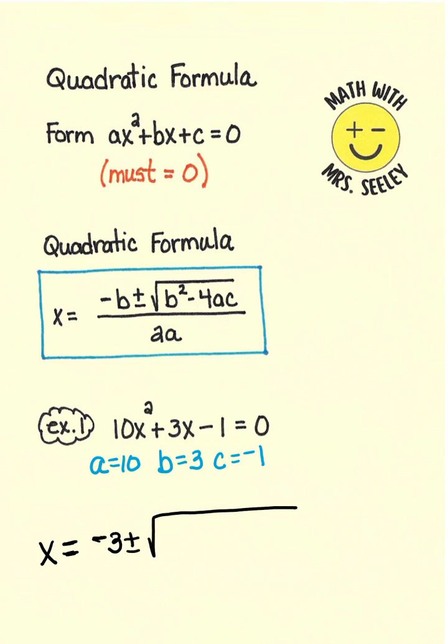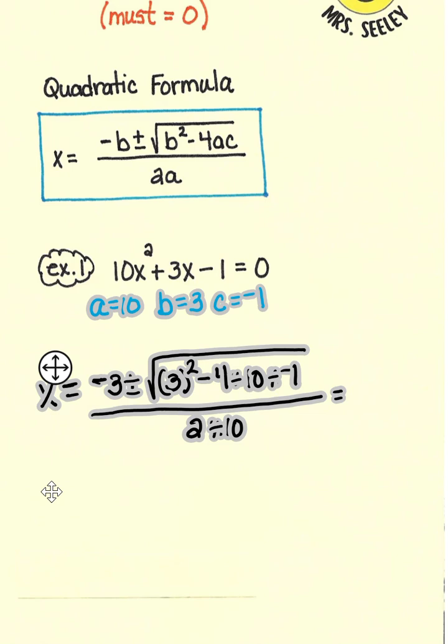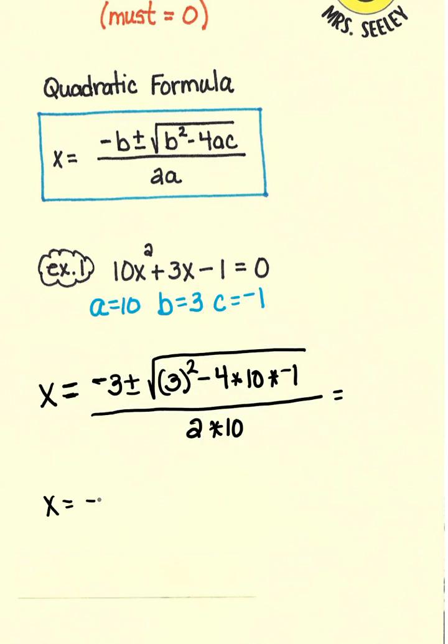or minus the square root of b squared minus 4 times a times c all over 2 times a. Then we will say x equals negative 3 plus or minus. Draw the square root house, then go to your calculator or in your mind and see what this right here is equal to.